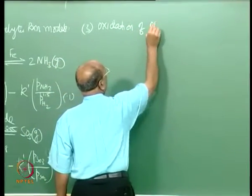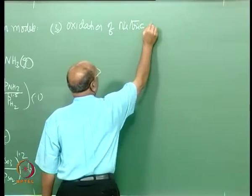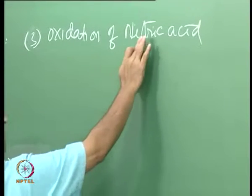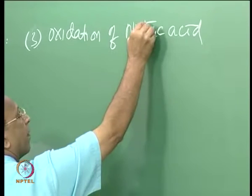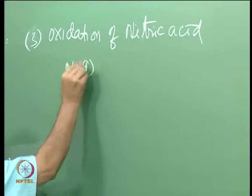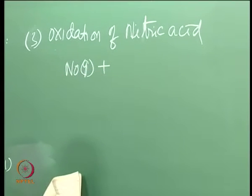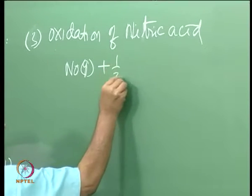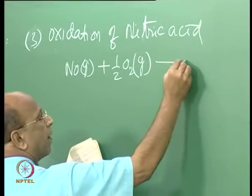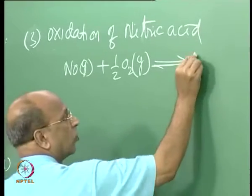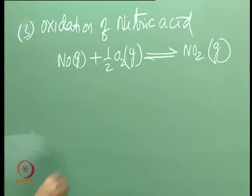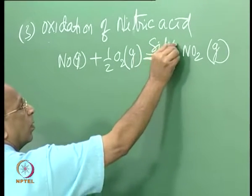The oxidation of nitric oxide: the reaction is 2 NO (gas) + O₂ (gas) giving 2 NO₂ (gas). The catalyst here is silica gel.